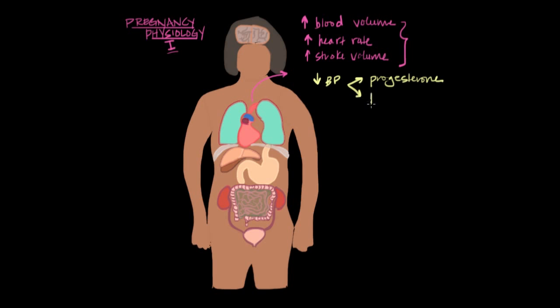The second thing that contributes to the lower blood pressure is the placenta, which is an addition of an entirely brand new blood vessel circuit to the circulatory system. It's like when you add a resistor in parallel, reducing the resistance of the entire circuit. I'm just joking, that doesn't help anyone understand it any better.